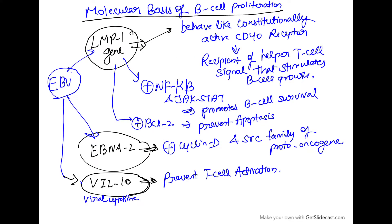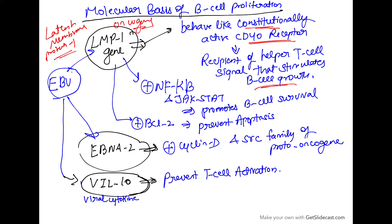Now, what is the molecular basis of B cell proliferation? EBV contains LMP1 gene — latent membrane protein 1 gene. It acts as an oncogene. It behaves like a constitutively active CD40 receptor. CD40 receptor is the recipient of helper T cell signals that stimulate B cell growth. Since it behaves like a constitutively active CD40 receptor, it doesn't need signals from helper T cells anymore, so B cell growth keeps on occurring.